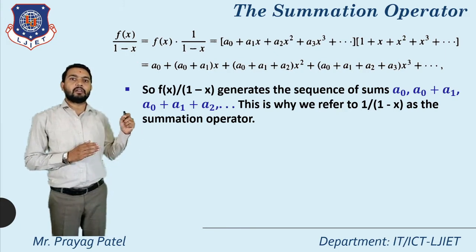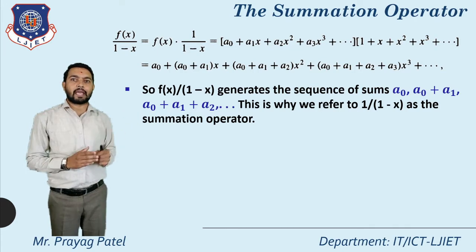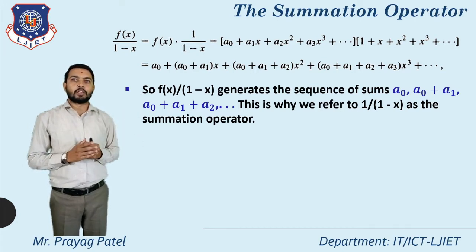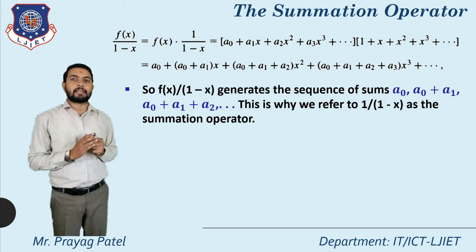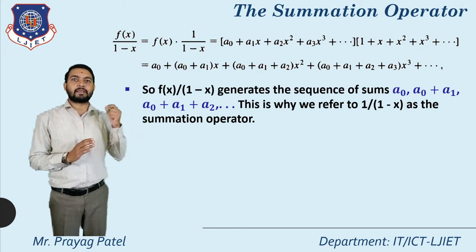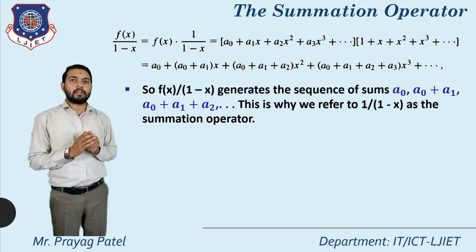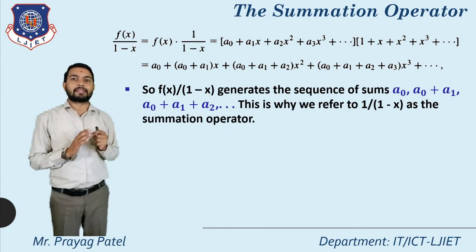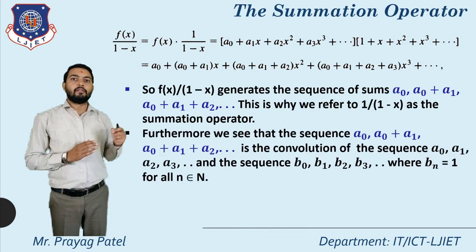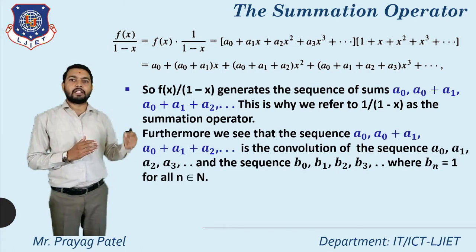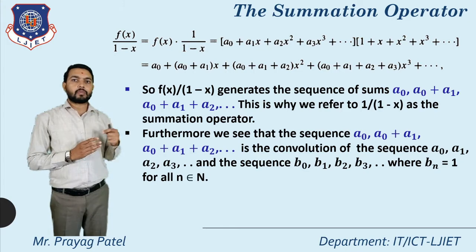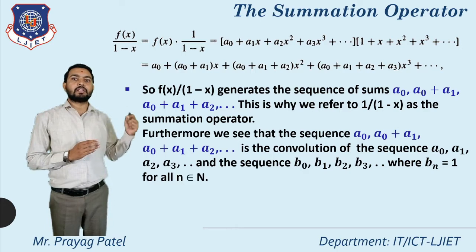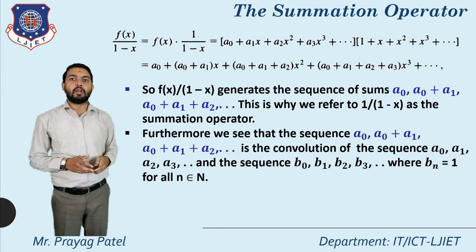This is why we refer to 1/(1-x) as the summation operator: when we multiply f(x) by 1/(1-x) we get the summation sequence. Furthermore, the sequence a0, a0+a1, a0+a1+a2 is the convolution of the sequence a0, a1, a2, a3 and the sequence b0, b1, b2, b3 where b(n) = 1 for all n.